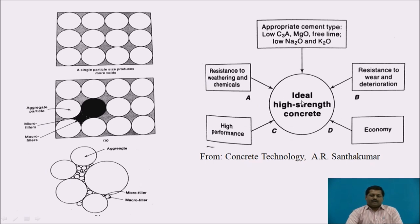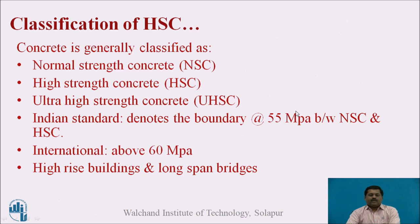An ideal high-strength concrete uses an appropriate cement type with low C3A, MgO-free lime, and low Na2O and K2O compounds. Such concrete provides resistance to weathering and chemicals, resistance to wear and deterioration, high performance in terms of strength and other properties, and must also be economical.